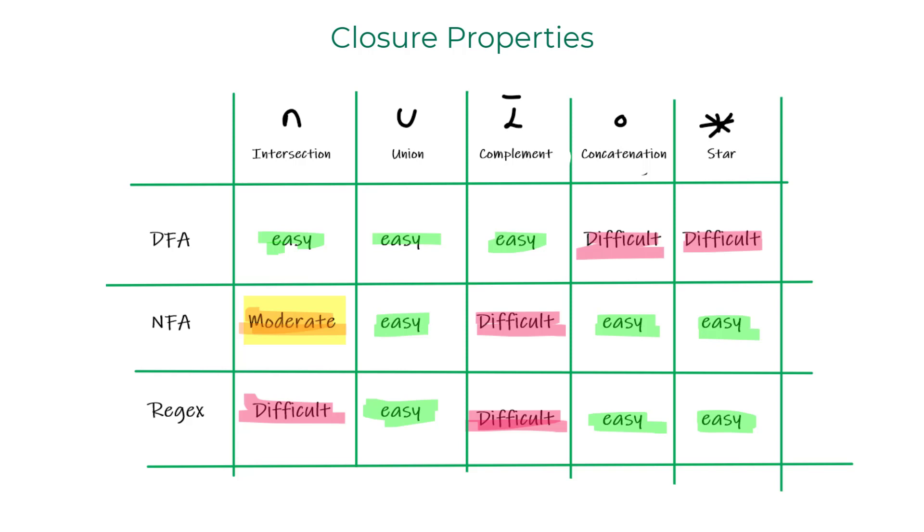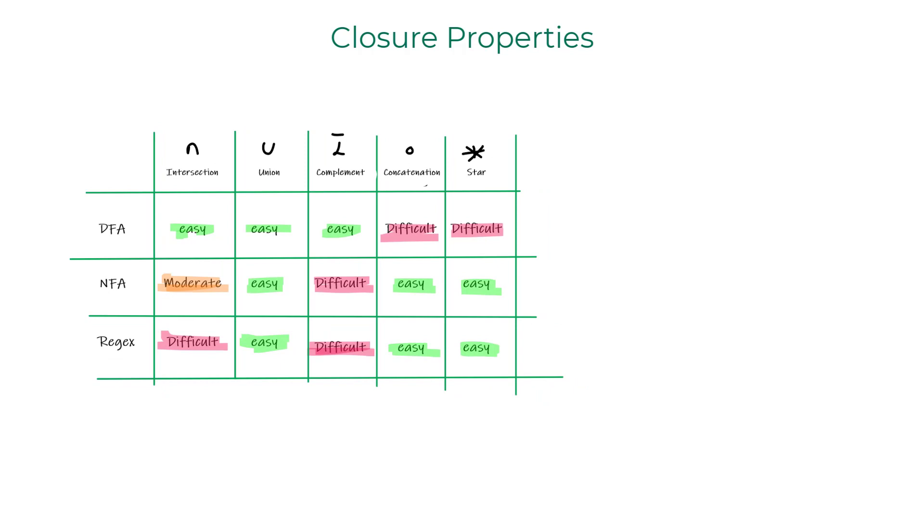Complement language of an NFA is tough to evaluate. The trick of flipping the accept non-accept states would not work for NFAs. Take this example NFA whose language is the character one. The complement language is every string in sigma star except one. But flipping the accept and non-accept states is going to result in an NFA that accepts only empty string.